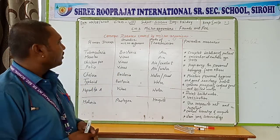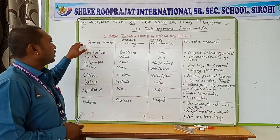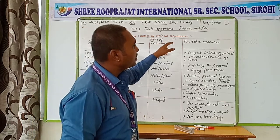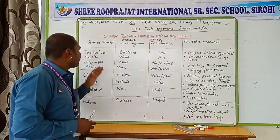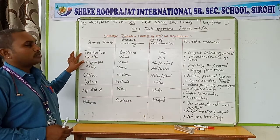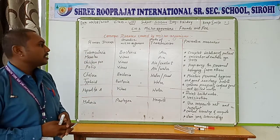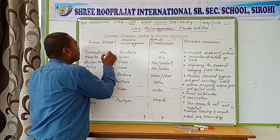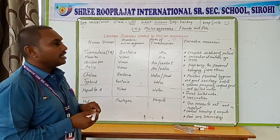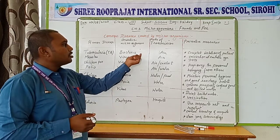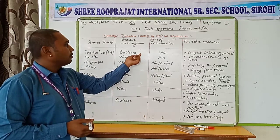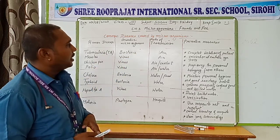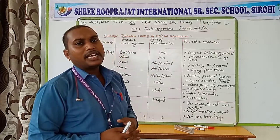The common diseases caused by microorganisms are shown in a table, also given in your textbook. The first column is human disease, the second is the causative microorganism, the third is the mode of transmission, and the fourth is preventive measures. The first disease is tuberculosis, also known as TB, which is caused by the bacteria Mycobacterium tuberculosis.